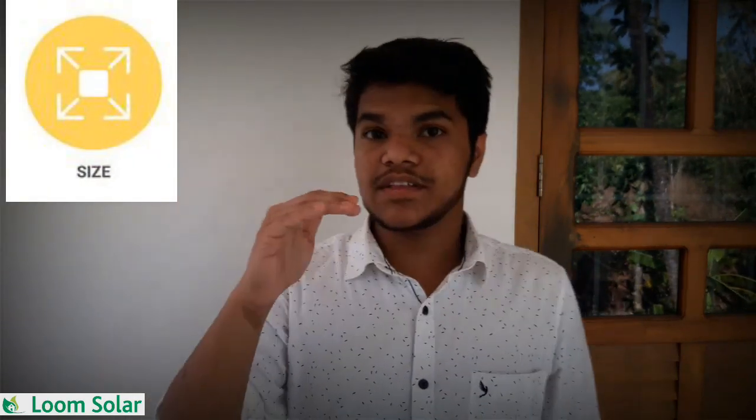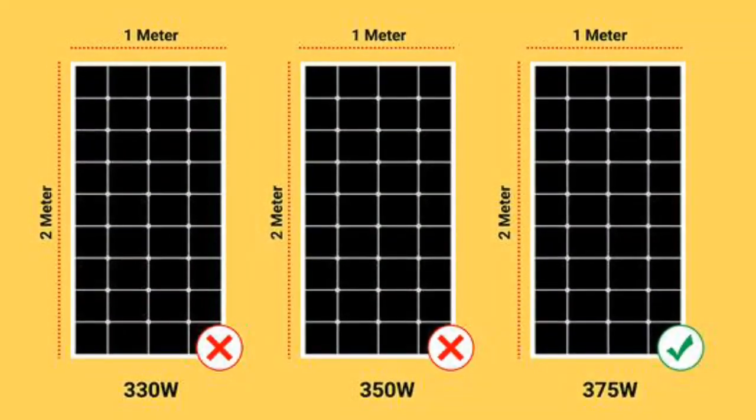The fourth factor is size. The solar panel size is measured in meters — for example, 1 meter by 2 meters. Larger size generally gives more output.